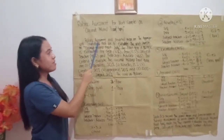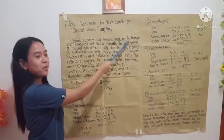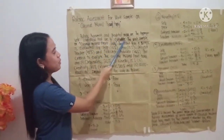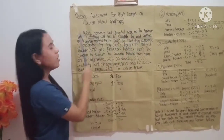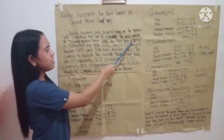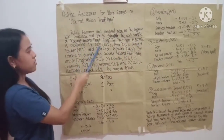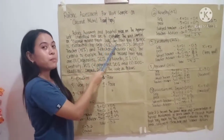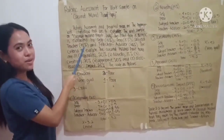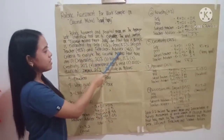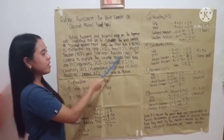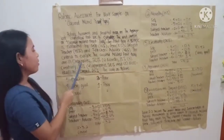Rubric assessment and weighted mean are the appropriate statistical tools used to evaluate the work sample on coconut mildred fruit tray. The fruit tray as sample is evaluated by self, 10%; peer, 10%; subject teacher, 45%; and teacher advisor, 35%.